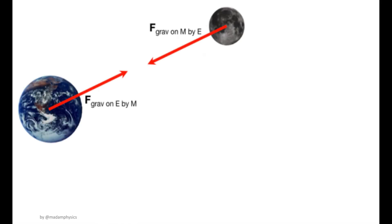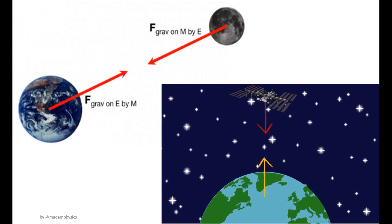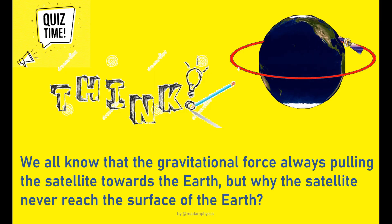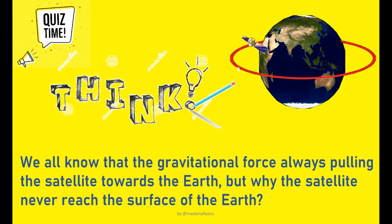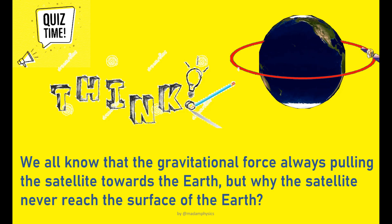These are examples of gravitational force between the Earth and Moon and also between the satellite and Earth. You must be thinking why the Moon and satellite are not attracted towards the Earth. Let us discuss this question that will explain why the Moon or satellite do not fall on the surface of the Earth.